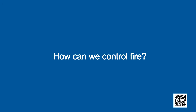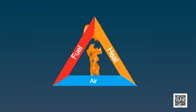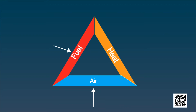Now let's see how we can control fire. Before that, it is important to know the conditions necessary for burning. The first condition is the combustible substance or fuel, the second is air, and the third is heat to raise the temperature of the fuel.